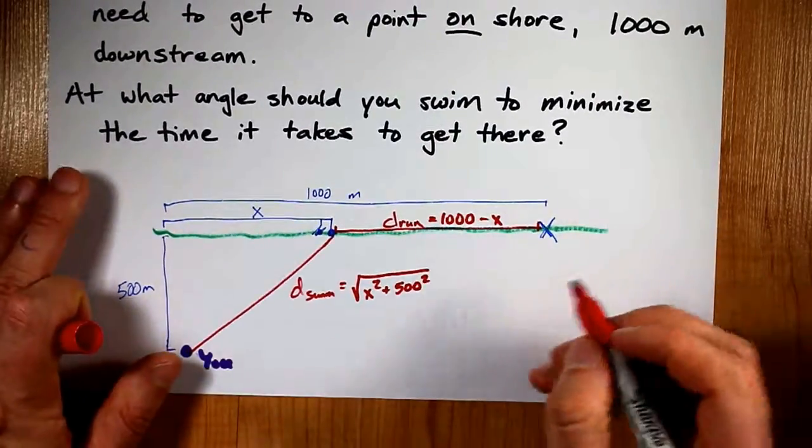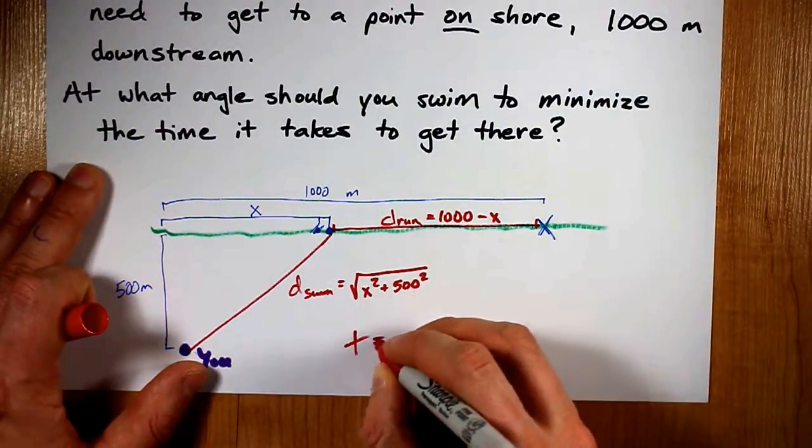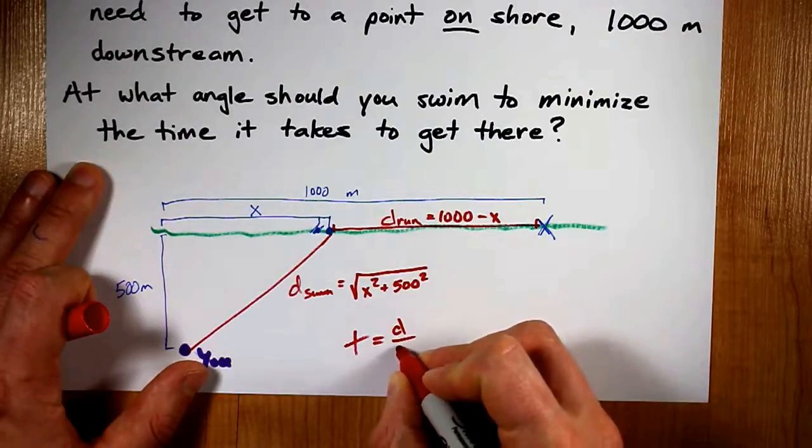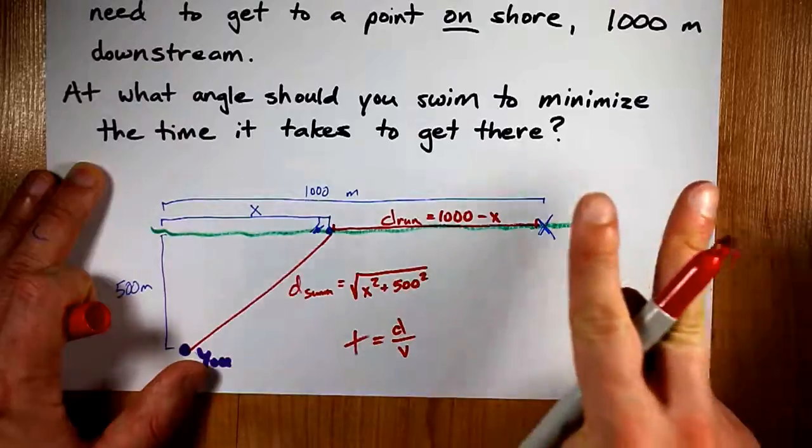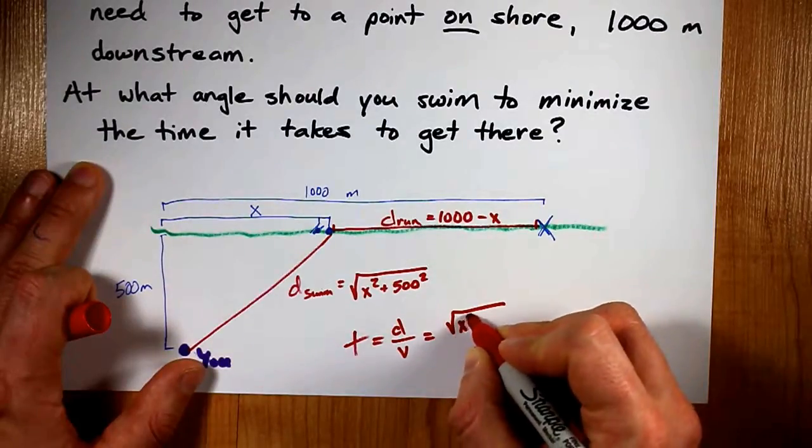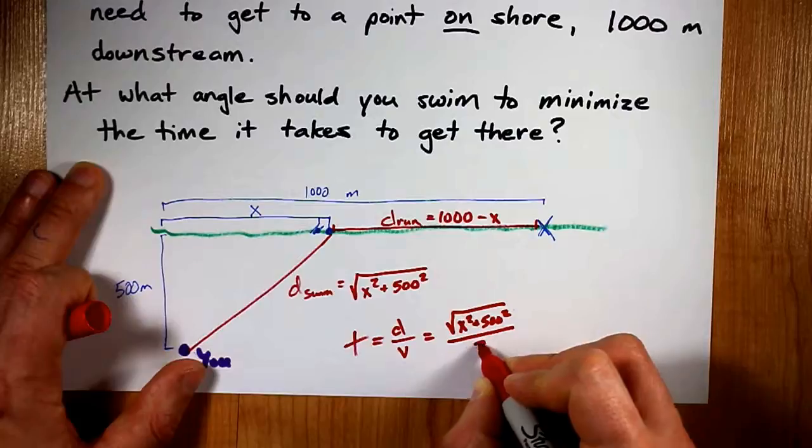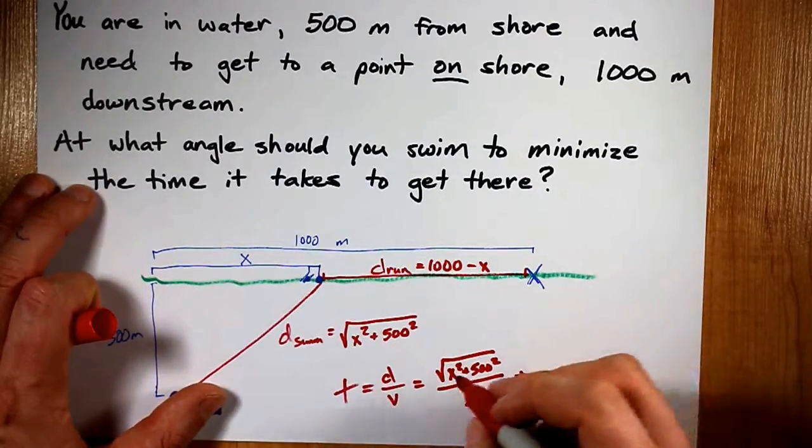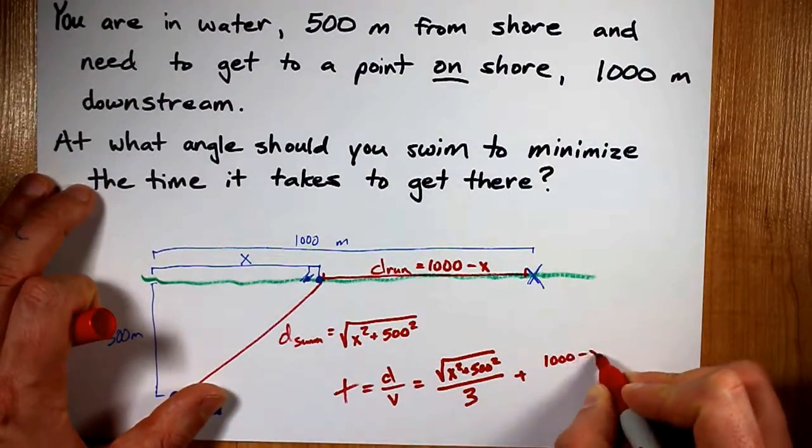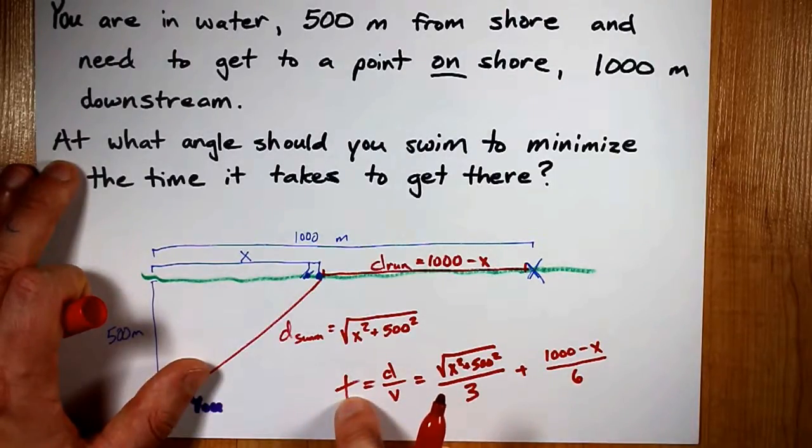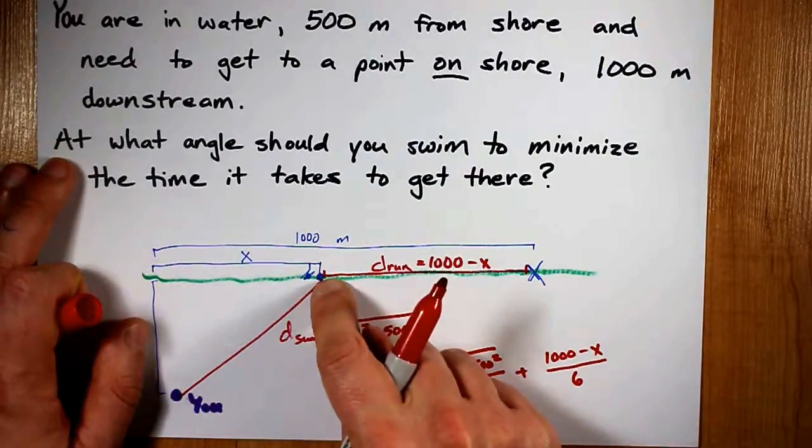Now the only other tricky thing is you figuring out an expression for the time required. The time required is always going to be the distance you covered divided by the speed. Now, we're going to have to do this in two legs and add the times on top of each other. The distance you swim is the square root of x squared plus 500 squared divided by your speed swimming. That's 3. And the distance you cover by running is 1000 minus x divided by your speed. That's 6. This is the equation that bases time off of x, the distance downstream that you swam to.